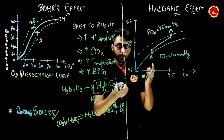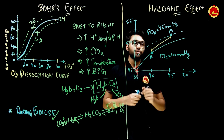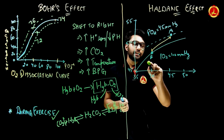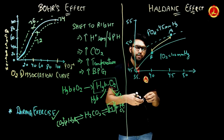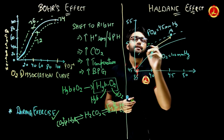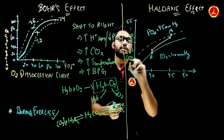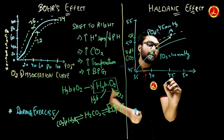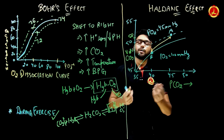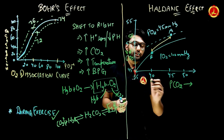Now we move to the Haldane effect. I have drawn the carbon dioxide dissociation curve. Point A is where the partial pressure of oxygen is 45 mmHg, and another point is where the partial pressure of oxygen is 100 mmHg. The y-axis is volume percentage of carbon dioxide in the blood, and the x-axis is the partial pressure of carbon dioxide. A partial pressure of CO2 of 45 mmHg corresponds to the veins.